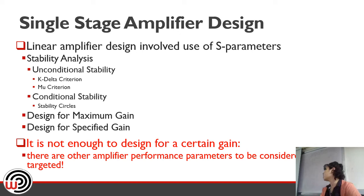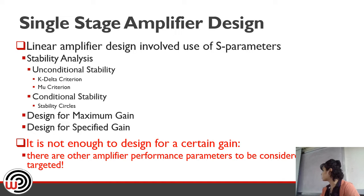You already know how to design for maximum gain, which entails that your source and load are both conjugately matched. You can get the load and source impedances from the S-parameters of the transistor. If you don't want the maximum gain, you can design for a specified gain by changing the gain of the input and output matching network to sub-optimal gain.